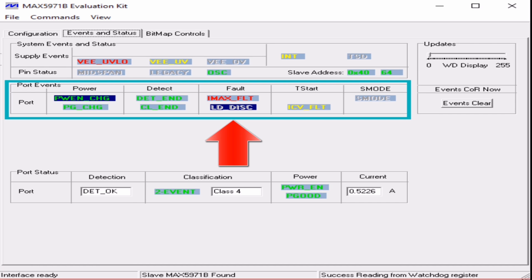Looks like a fault flag has appeared. IMAX_FLT, meaning an overcurrent fault has occurred, hence our PSE disconnected the power.